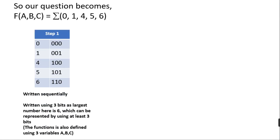Now I'm going to write all of those numbers in ascending order from smallest to largest, and write their binary representation. I used three bits of binary because the largest minterm here is 6, and 6 can be represented using at least three binary bits. Also, the function is defined by three variables, confirming we need three bits.